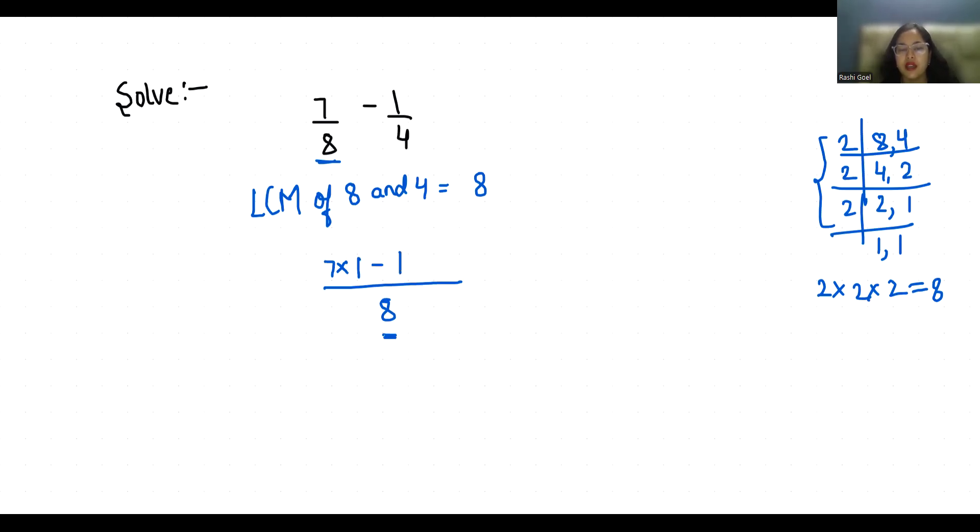Now write the numerator of the next number, write the multiply sign, and check in table of 4, 8 comes at which place? 2. So 7 minus 2 by 8, that is 5/8.